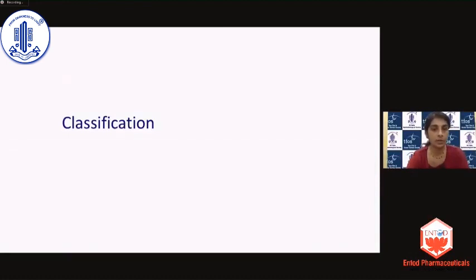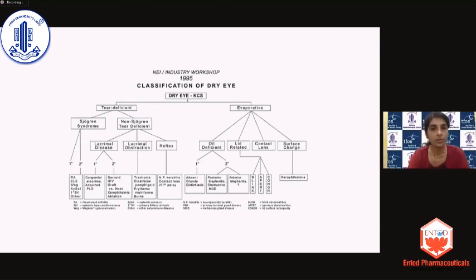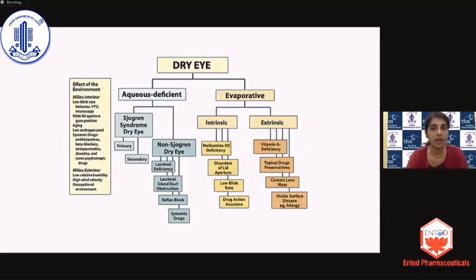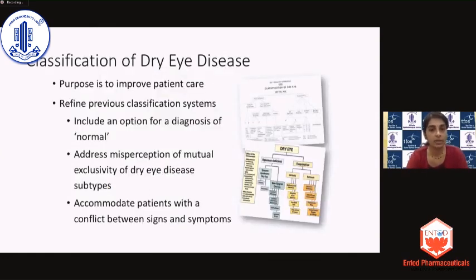Once we've understood the definition in its entirety, we can proceed to understanding the classification of dry eye disease, which has also undergone an evolution over the years. In the earlier classifications, whether in 1995 or in 2007, it was basically classified into aqueous deficient and evaporative dry eye disease, which gave a misperception that a particular patient had to be fitted into one of these two categories. The concept of a mixed or hybrid dry eye disease did not exist.